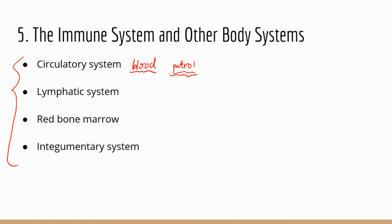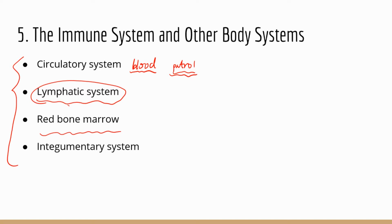The lymphatic system is actually very important and can be considered a part of the immune system because many of its functions are related to protection. Red bone marrow is part of the skeletal system — it's inside bones, such as long bones or flat bones. Red bone marrow is where the production of blood cells, including all leukocytes, takes place.